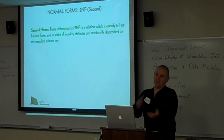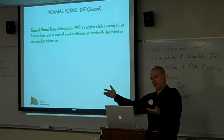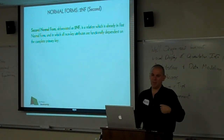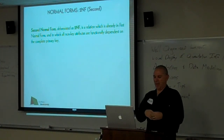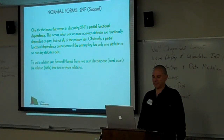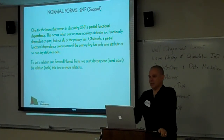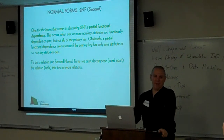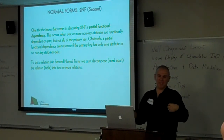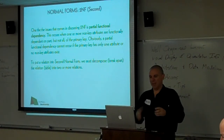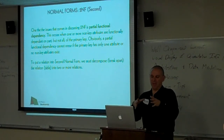When you go up in normal forms, it always implies that whatever you're working with is already past the previous set of standards. So second normal form means it's already in first normal form, and all non-key values are dependent on the primary key or candidate key. Let's talk about partial functional dependencies. If you have two values that uniquely identify a row in your table, and another attribute that's linked to only one of them, that can cause problems — that's called a partial functional dependency.